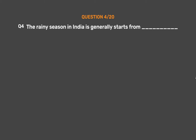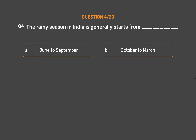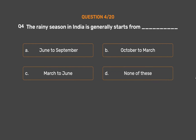Question No. 4: The rainy season in India generally starts from ___. Option A: June to September. Option B: October to March. Option C: March to June. Option D: None of these.